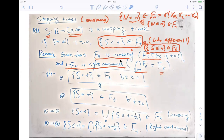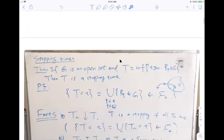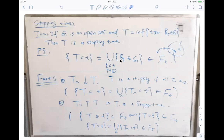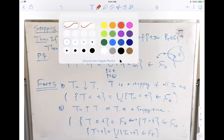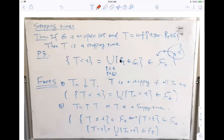There are several easy-to-check results: the minimum of two stopping times is a stopping time; the maximum of two stopping times is a stopping time. A constant function is a stopping time. If you take truncations from above, that's also a stopping time. The second result: if you have a sequence of stopping times and take the supremum, that's also a stopping time. And if a sequence of stopping times converges, the limit is also a stopping time. Another example: if K is a closed set, the hitting time is a stopping time. More generally, if A is an F-sigma set (countable union of closed sets), the hitting time is a stopping time. And if A is a G-delta set (countable intersection of open sets), the hitting time is also a stopping time.